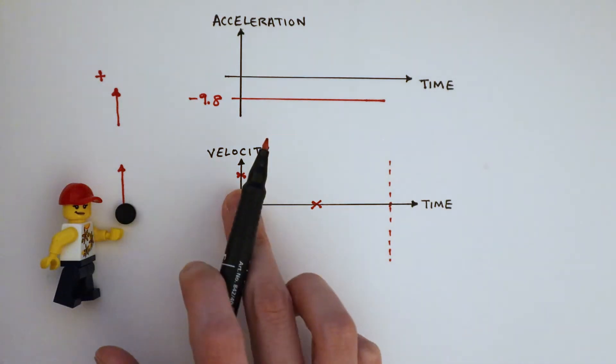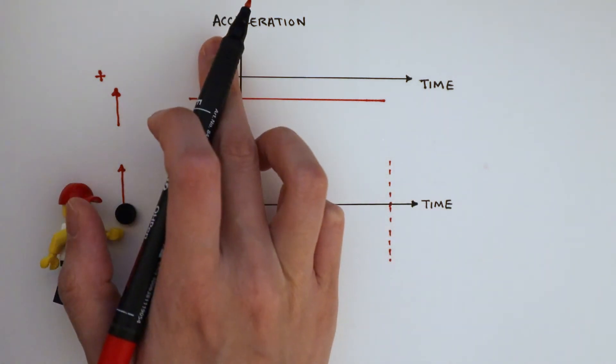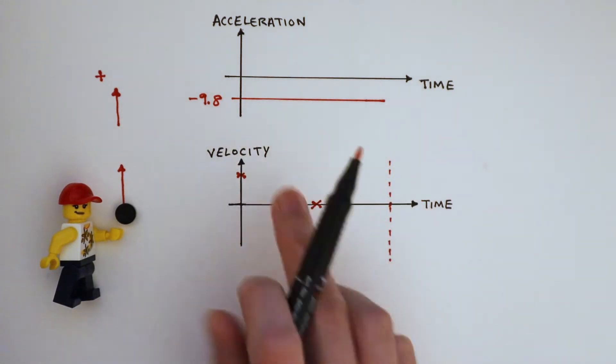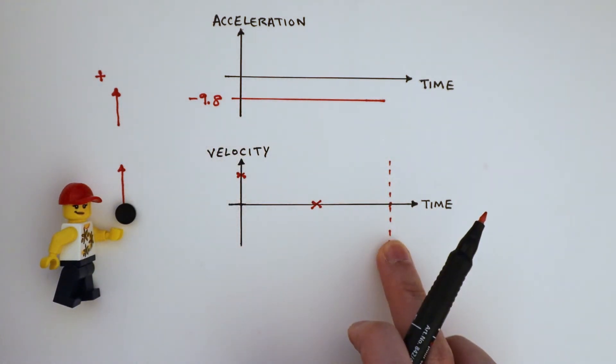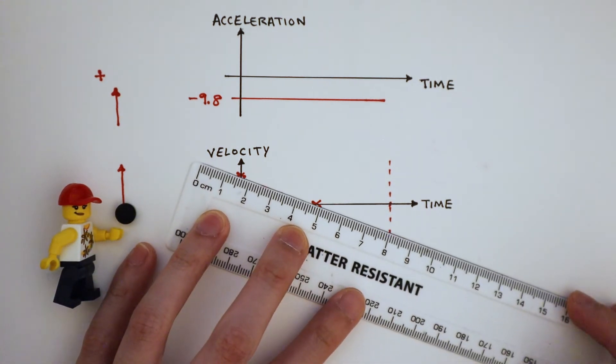On a velocity time graph, the gradient represents the object's acceleration. Since acceleration is constant and is negative, the gradient here must also be constant and negative. It has to be a straight line crossing these two points.